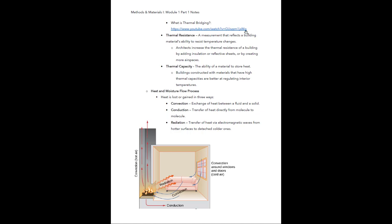Thermal resistance is a measurement that reflects a building material's ability to resist temperature changes. Architects increase thermal resistance by adding insulation, reflective sheets, or by creating more air spaces within a building's assembly. Thermal capacity is the ability of a material to store heat. Buildings are constructed with materials that have high thermal capacities, which are better at regulating interior temperatures. When you think of thermal capacity, think of insulation — we're putting things into the building structure that retain heat so we can regulate the interior temperature as efficiently as possible.